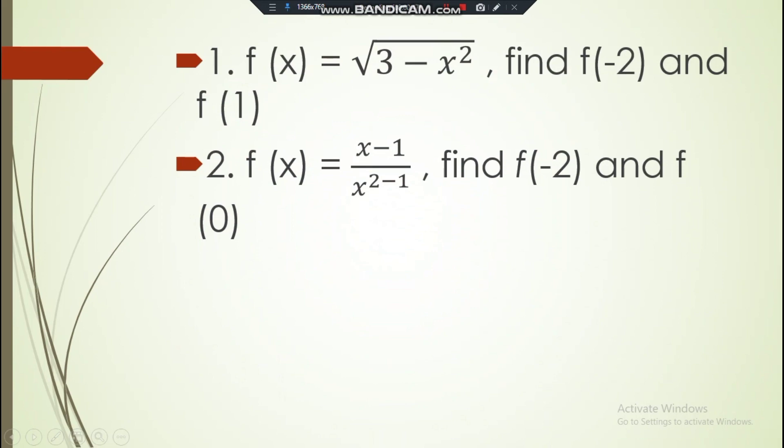Item number 2: f(x) = (x - 1)/(x² - 1). Find f(-2) and f(0). Still, we have two answers here.